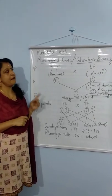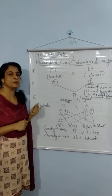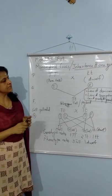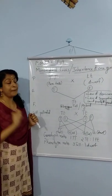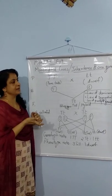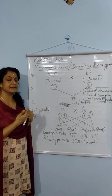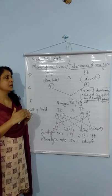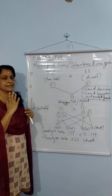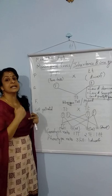Based on the observations from his monohybrid crosses, Mendel formulated two important laws. Before going to the laws, what were his observations? He observed that when he took a pair of contrasting characters, in the F1, only one character was shown. The other character remained hidden. The character that appeared in the F1 he called the dominant character, and that which appeared only in the F2 generation he called the recessive character.